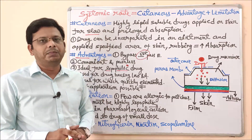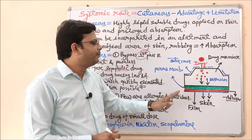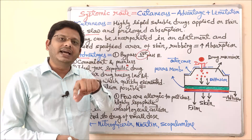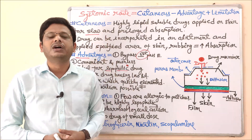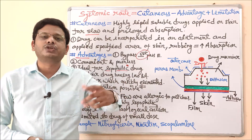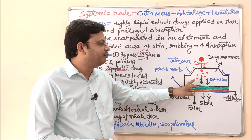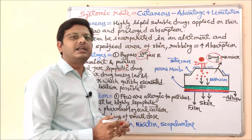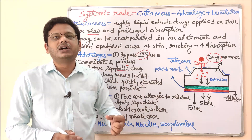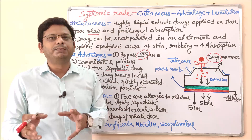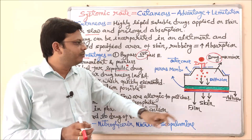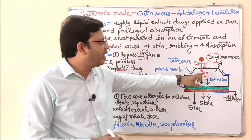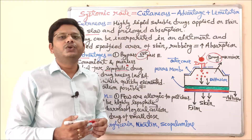Let me explain the transdermal patch with a diagram. A transdermal patch is a sticking substance with a reservoir in which the drug is fixed, so the drug diffuses when the patch is applied over the skin. The first component is the drug reservoir — a matrix that holds the drug of desirable action. For example, belladonna or a disinfectant can be absorbed into this matrix and then diffused when applied to the skin.